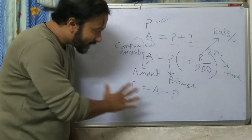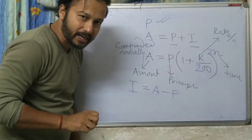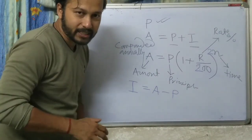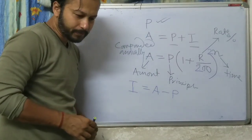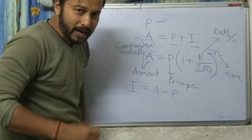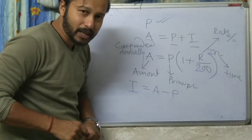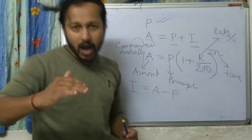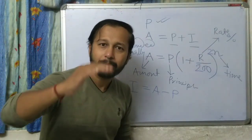This is the formula for compounded annually. For compounded half yearly, the formula is A equals P into (1 plus R by 200) to the power 2N. R and N remain the same otherwise. With this formula you will get the amount. Then interest equals amount minus principal.